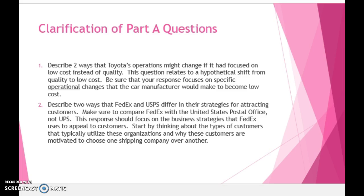Our second topic will be a general clarification of the assignment's questions. Part A focuses on the ways that Toyota's operations might have changed if it focused on low cost instead of quality. It is important to understand that quality is Toyota's operational strategy, but your response should focus on the hypothetical ways in which the company's operations might change if it did switch to low cost.